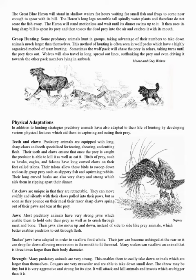In addition to hunting strategies, predatory animals have also adapted physically by developing various features which aid in capturing and eating their prey. Predatory animals are equipped with long, sharp claws and teeth specialized for tearing, shearing, and cutting flesh. Birds of prey such as hawks, eagles, and falcons have long curved claws on their feet called talons, allowing them to swoop down and grasp slippery fish and squirming rabbits. Their long curved beaks are also sharp and strong, aiding in ripping apart their dinner. Cat claws are retractable — cats can move swiftly with claws pulled in, but when they pounce, razor-sharp claws spring out and tear at the prey.